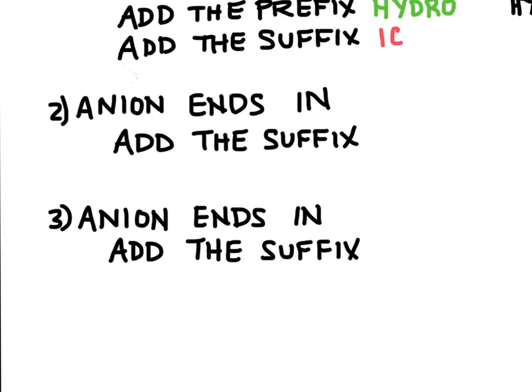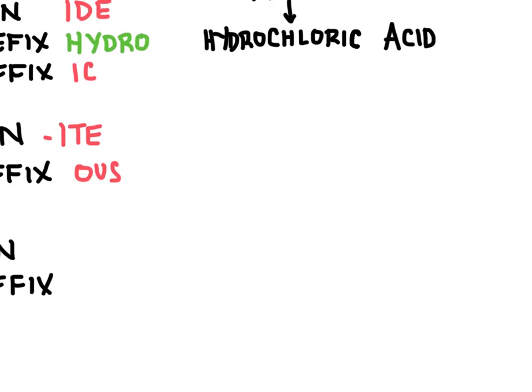Here's the second one. If the anion ends in ite, we're going to add the suffix ous. And so here's what this one will look like. This one has the anion nitrite.